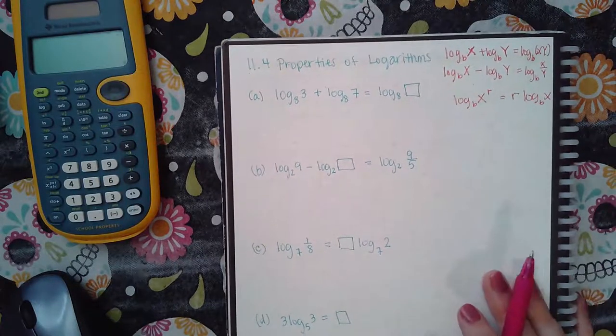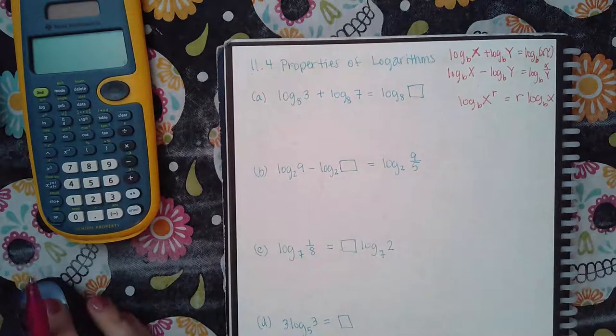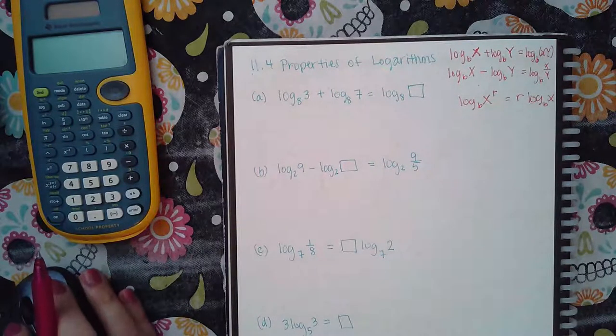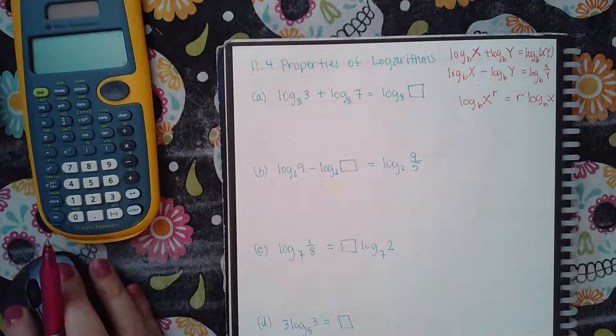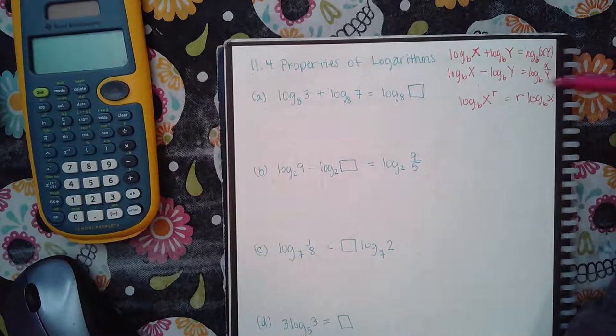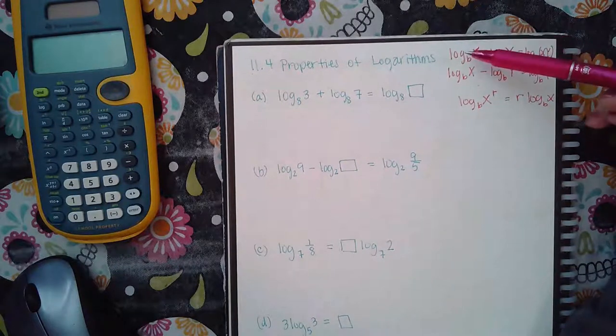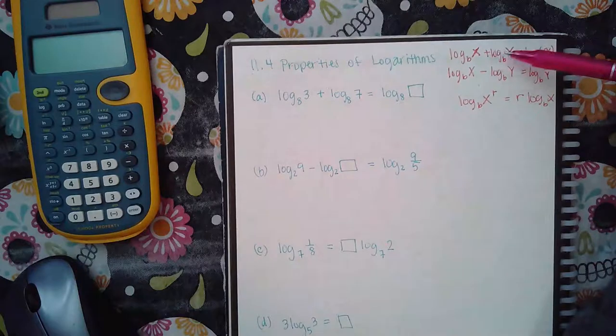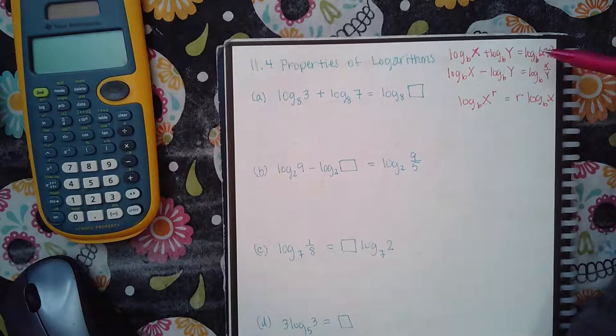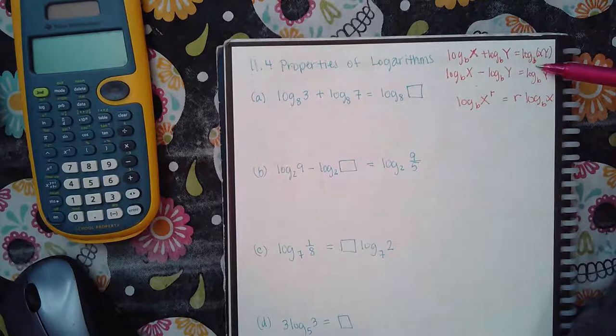Okay, here we have 11.4 properties of logarithms. There are three main properties. We have the log base of an argument plus log with the same base of another argument is equal to the log with the common base of the first argument multiplied by the second argument.